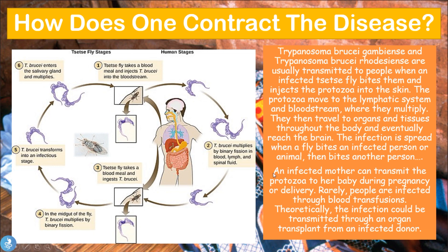One may also contract this disease through other routes. An infected mother can transmit the protozoa to her baby during pregnancy or delivery — meaning the disease can be transmitted congenitally. Rarely, people may also contract the disease through a blood transfusion from an infected person, and theoretically the infection can also be transmitted through organ transplant from an infected donor.